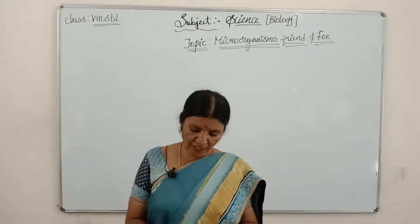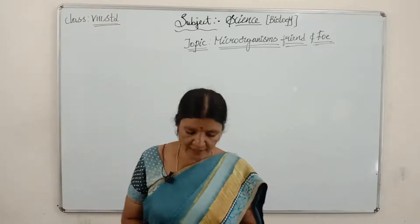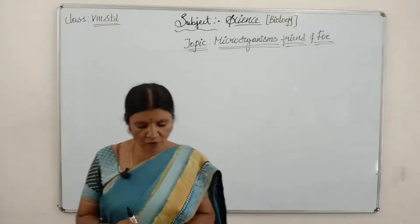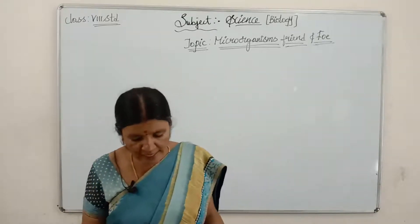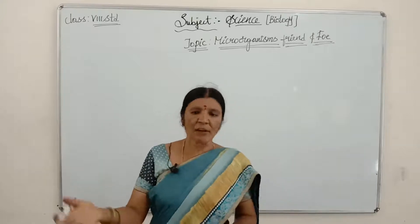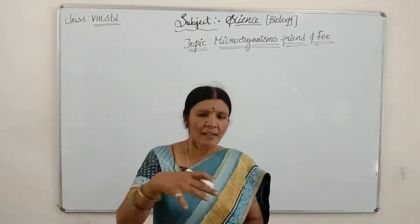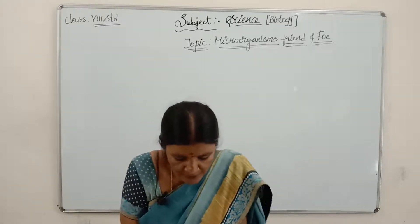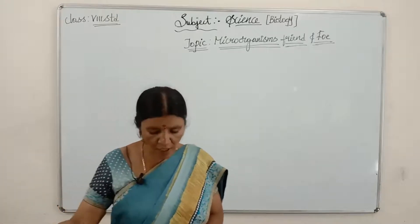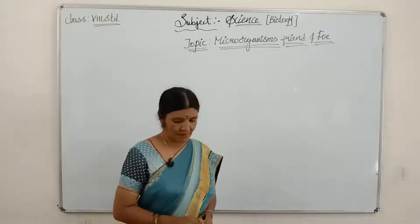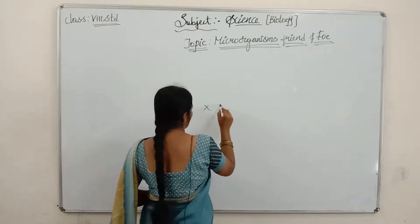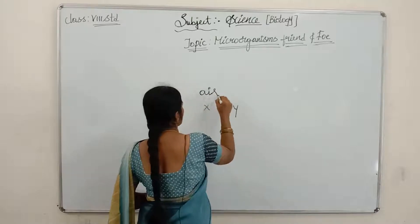If a person X has cough or tuberculosis, he will cough in the air. When he coughs, some microorganisms from his mouth come out and spread into the air. His friend Y, who is nearby, gets those microorganisms and also gets tuberculosis. So air helps in transmitting the disease from X to Y.